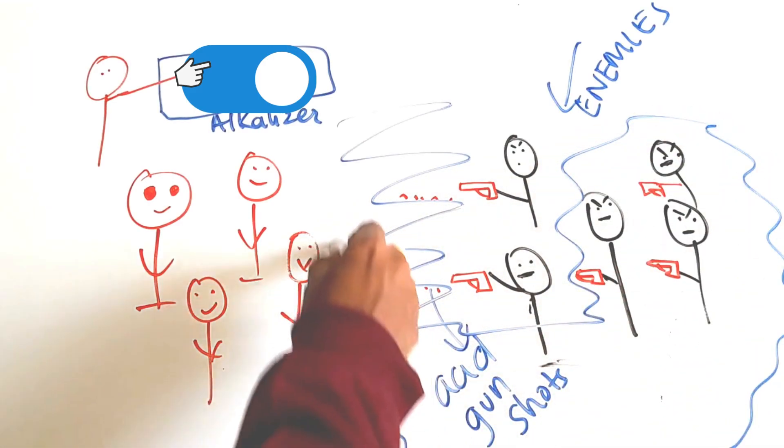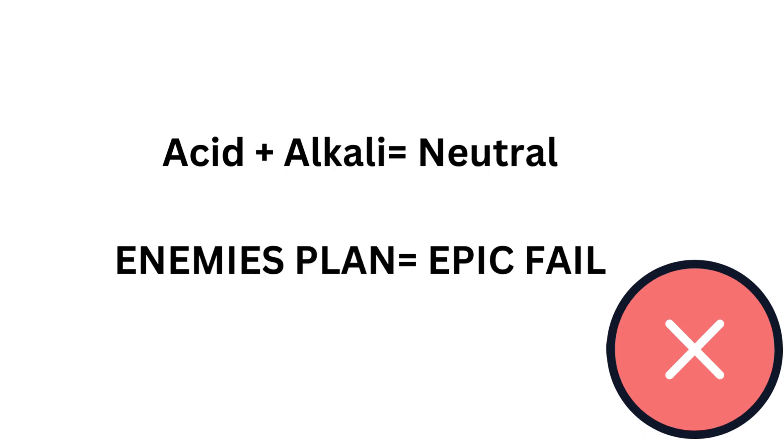It was an alkalizer hydroxide. What happens when acid and alkaline come together? It becomes neutral. So the enemy's acid didn't work at all.